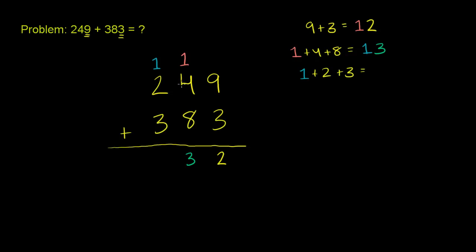right? 1 plus 2 is 3, plus 3 is 6. So that is equal to 6. So we write it right over here. So 249 plus 383 is 632.